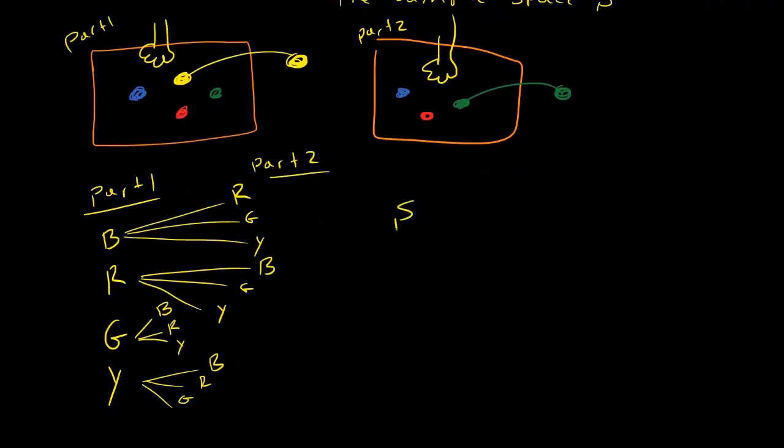So I could list out every element in my sample space using this tree diagram. So the first one, I'd have blue then red, then blue then green, blue then yellow, and red then blue, red then green. And I could just continue listing them all until I get to the final one, which is yellow and green.